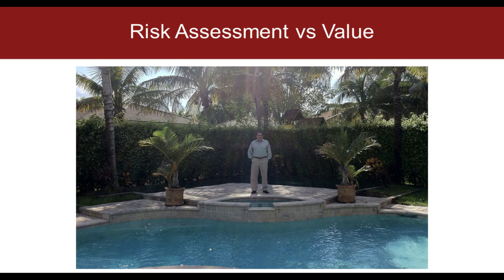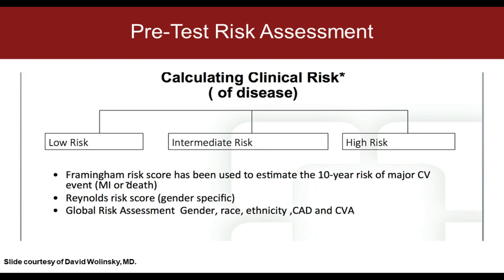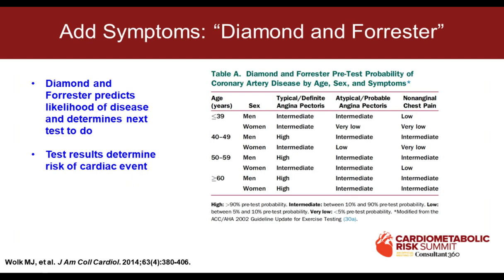That's where clinical risk assessment comes into play. We've talked about high blood pressure, diabetes, and hyperlipidemia. You start with three categories: low risk, intermediate risk, high risk. You can use Framingham, the Reynolds score for women, or most of us now use the global risk assessment — I keep it on my phone and do the calculation in the office. Then you add symptoms using Diamond and Forrester: three types — definite angina, atypical, and non-anginal chest pain — to determine pre-test likelihood.